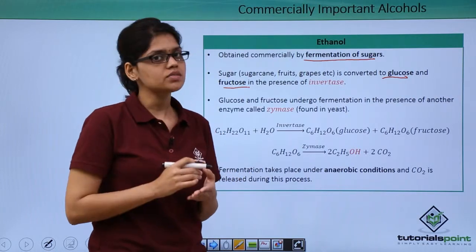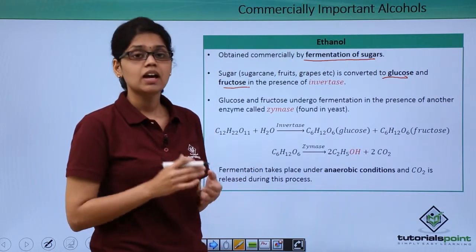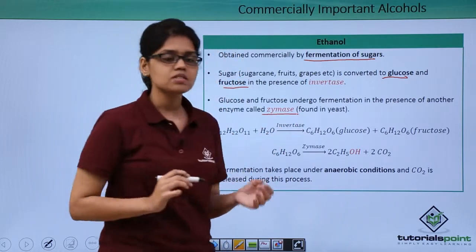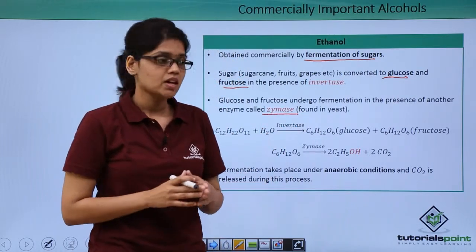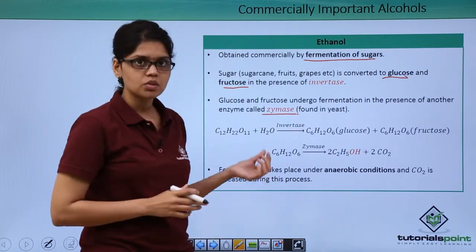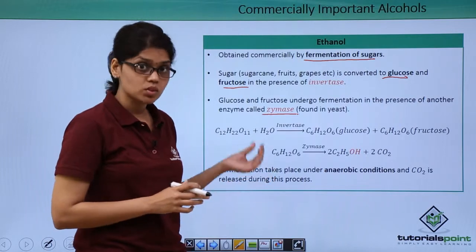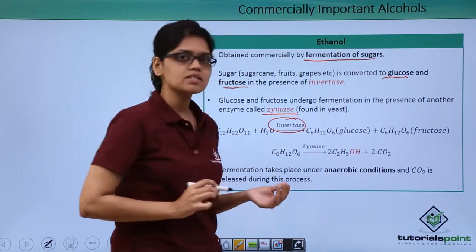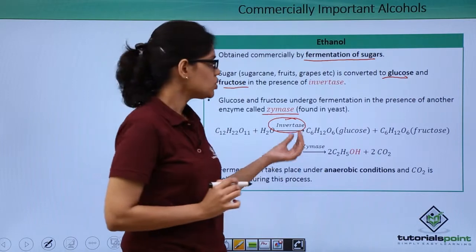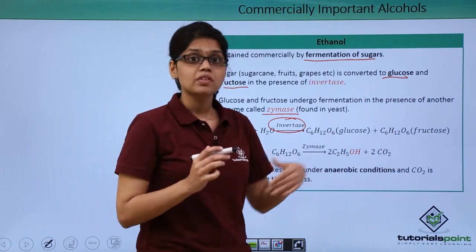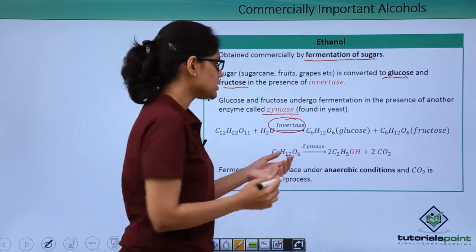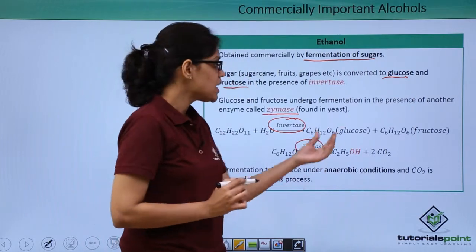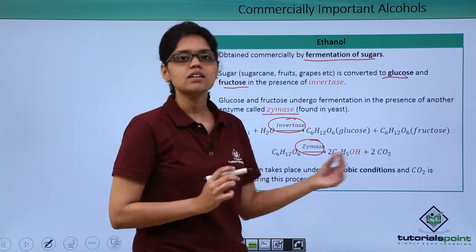This glucose and fructose undergoes fermentation in the presence of another enzyme called zymase, which is usually found in yeast. As you can see, C12H22O11 sugar in the presence of water and an enzyme called invertase converts it to glucose and fructose, which then undergoes fermentation in the presence of another enzyme zymase to give ethanol and carbon dioxide.